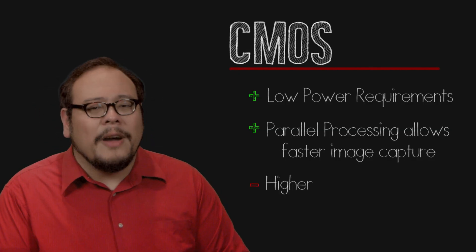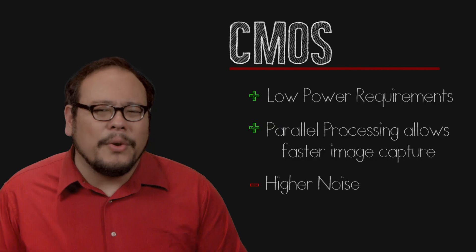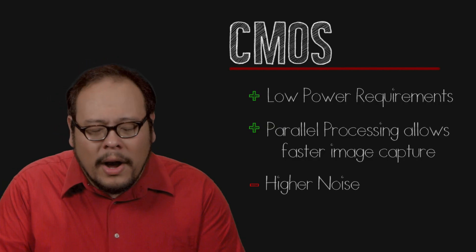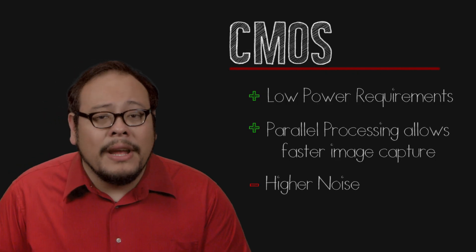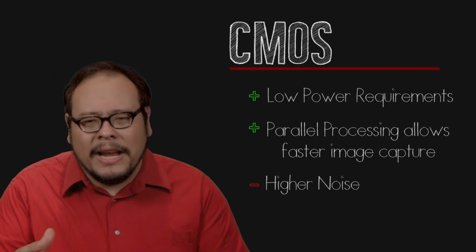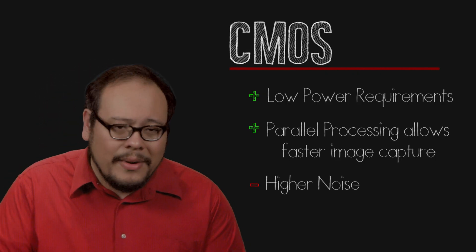But one of the drawbacks of the CMOS sensor is higher noise. In CCDs, you only have one amplifier at the end of the imaging process. In a CMOS sensor, each pixel has an amplifier and micro variations can cause noise issues.